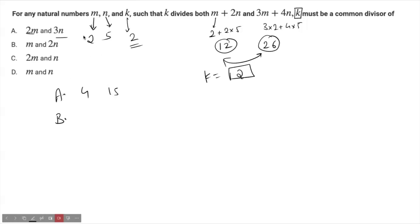As per option C, 2m is 2×2=4 and n is equal to 5. As per option D, m and n are 2 and 5.